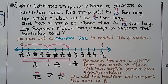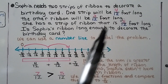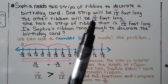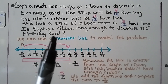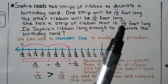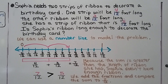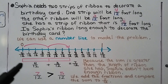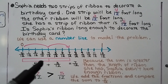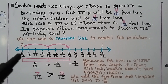Sophia needs two strips of ribbon to decorate a birthday card. One strip will be four-twelfths foot long and the other will be three-twelfths foot long. She has a strip that is five-twelfths foot long. Is Sophia's ribbon long enough? We can use a number line to model the problem, marked from zero-twelfths to twelve-twelfths.